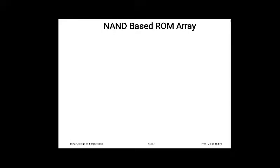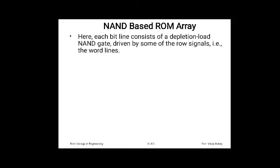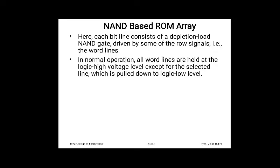Next we will see the NAND based ROM array and its decoder design. In the NAND based ROM, each bit line consists of a depletion load driven by the sum of row signals, which are the word lines. The depletion load is always ON.